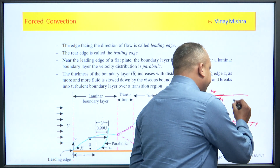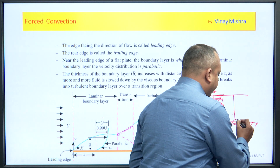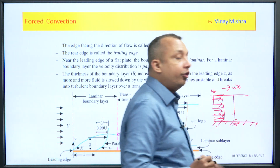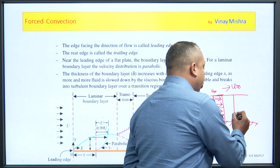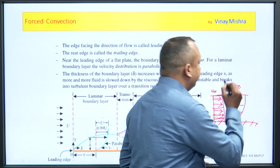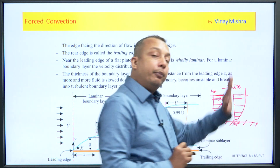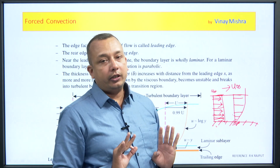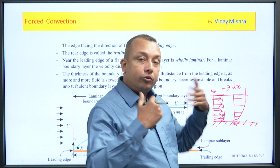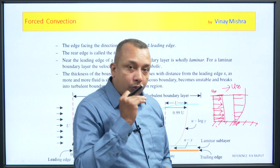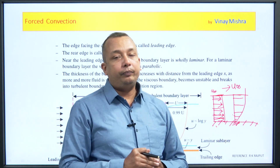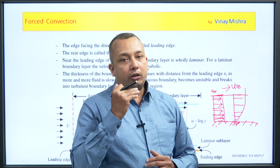If we draw a velocity profile here: at the surface there is zero velocity, and at a distance there is some velocity. If we draw the free stream velocity u-infinity, the velocity profile will go smoothly from zero at the wall up to the free stream. The distance up to which this change occurs is our boundary layer thickness.